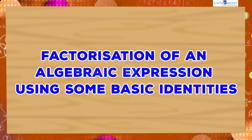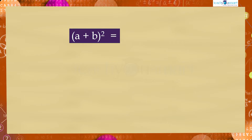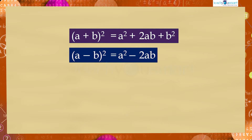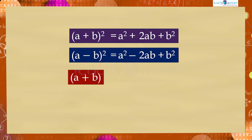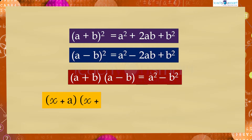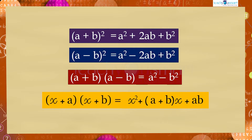We have already discussed some basic identities in the previous chapter: (a + b)² = a² + 2ab + b²; (a - b)² = a² - 2ab + b²; (a + b)(a - b) = a² - b²; and (x + a)(x + b) = x² + (a + b)x + ab.